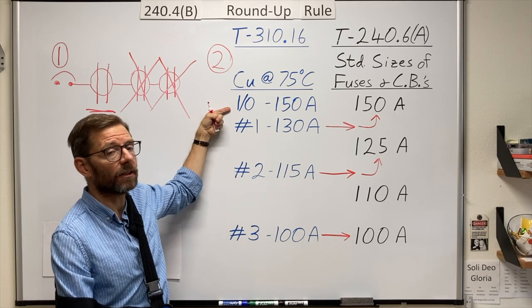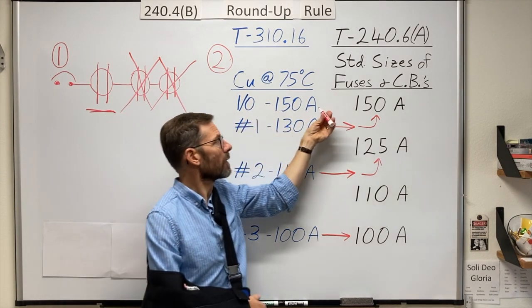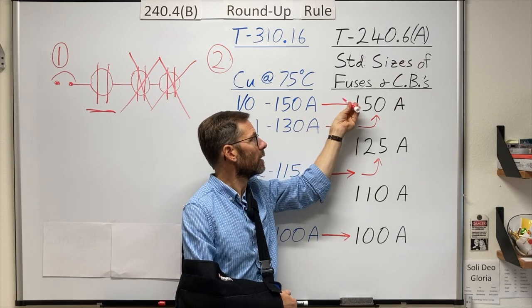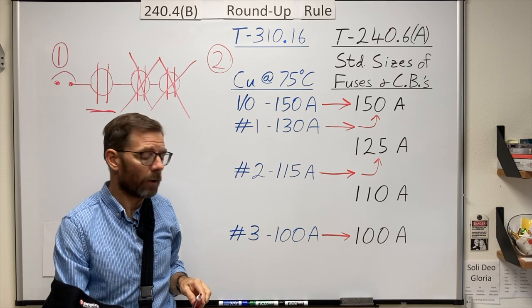And the one-aught? What do you think? 150 amps is its rating? Exactly matches the overcurrent device size. So that's where I'm stuck for that one.